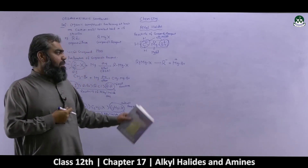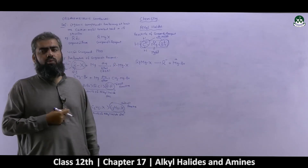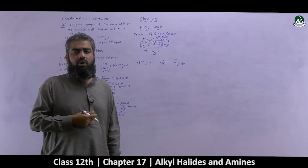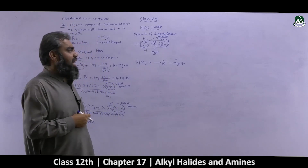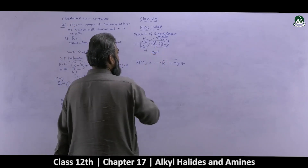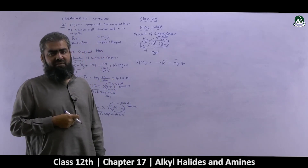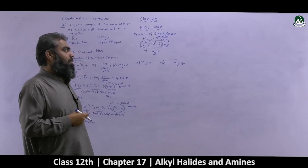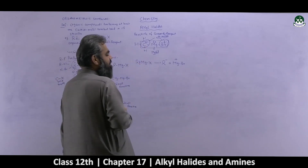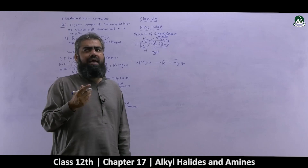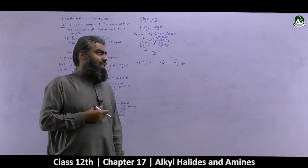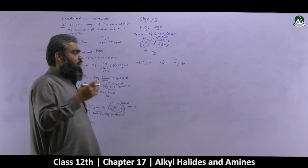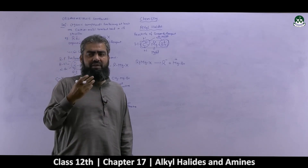You might ask: why was the carbon-magnesium bond broken and not the magnesium-halogen bond? Because comparing bond strengths, the magnesium-halogen covalent bond is quite difficult to break — it requires a lot of energy. In comparison, the carbon-magnesium covalent bond is relatively easier to break and requires less energy, so it is more reactive and cleaves preferentially.